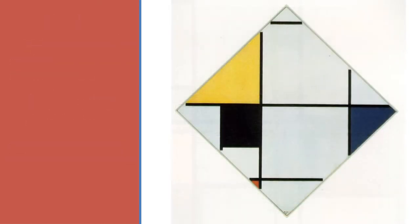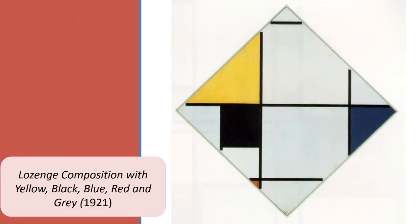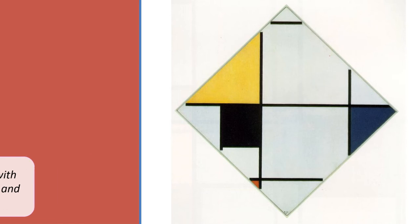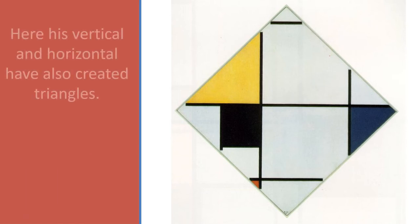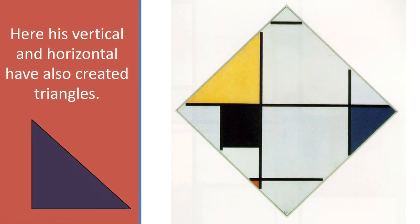Here, Mondrian explored painting on a diamond shape. His vertical and horizontal lines have created triangles.